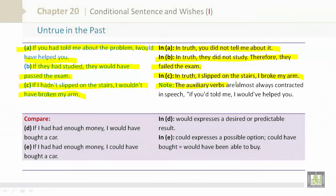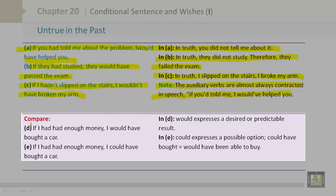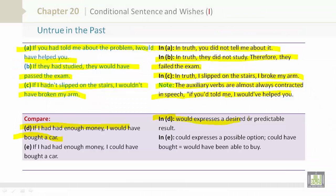Note: The auxiliary verbs are almost always contracted in speech. If you had told me, I would have helped you. Compare. D: If I had had enough money, I would have bought a car. In D, would expresses a desired or predictable result. E: If I had had enough money, I could have bought a car. In E, could expresses a possible option. Could have bought equals would have been able to buy.